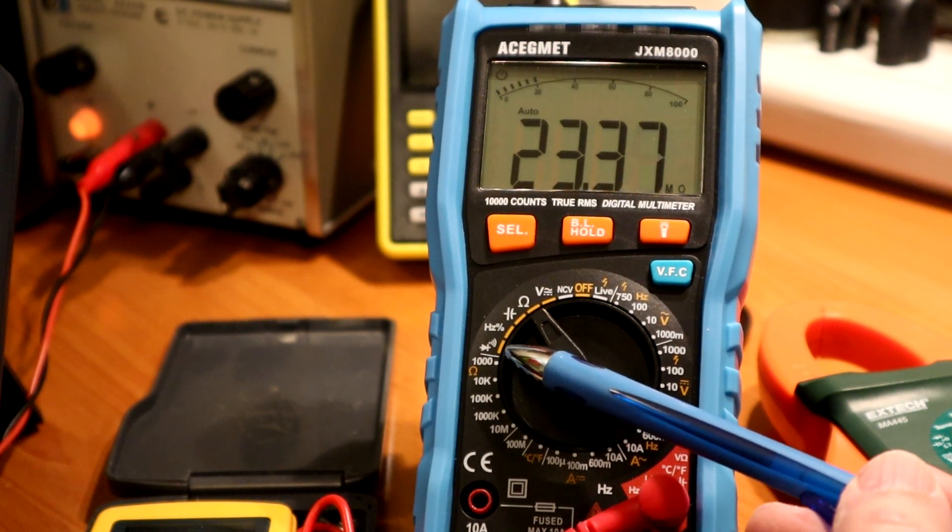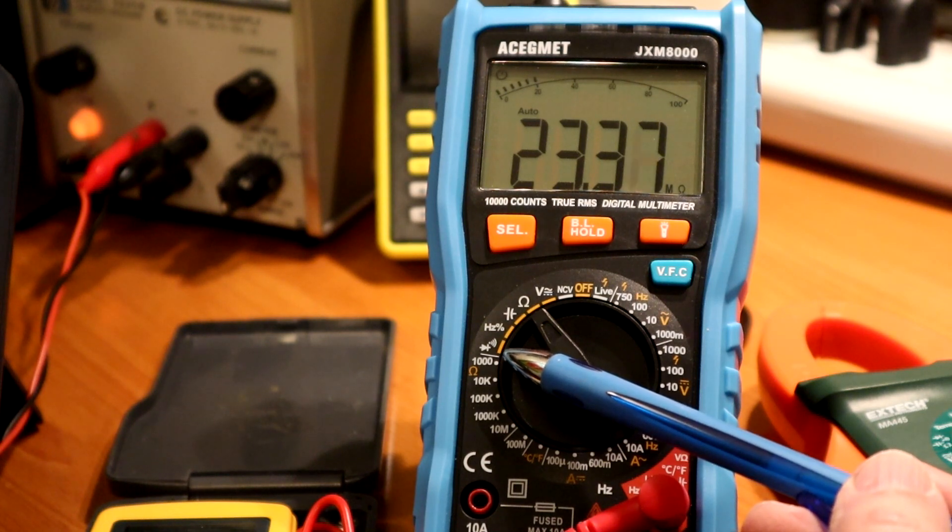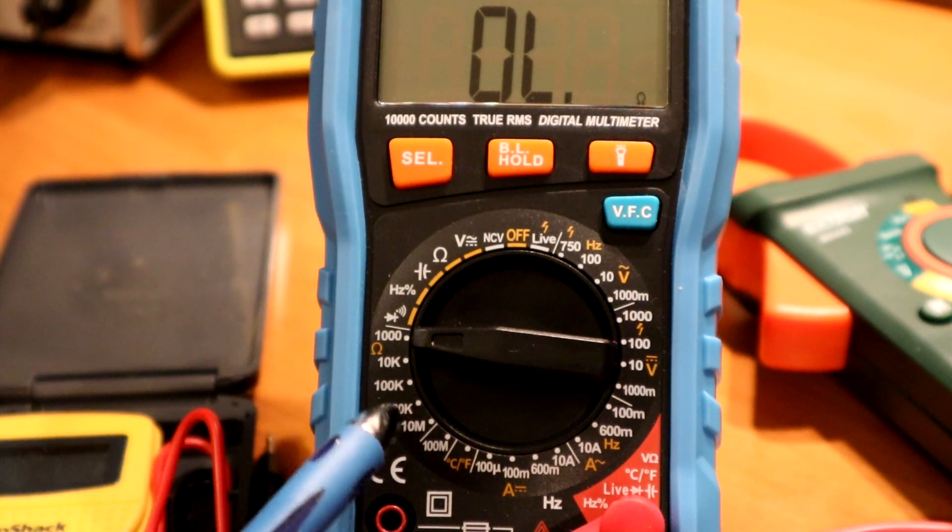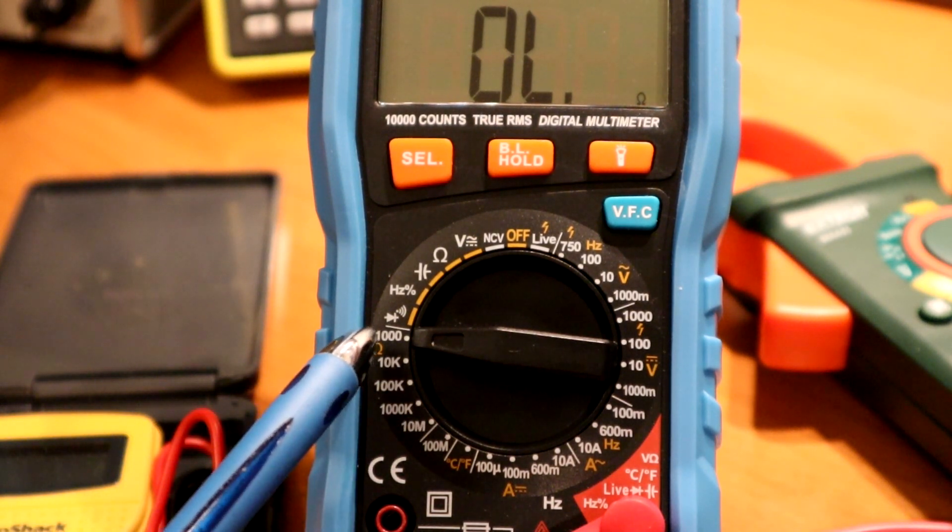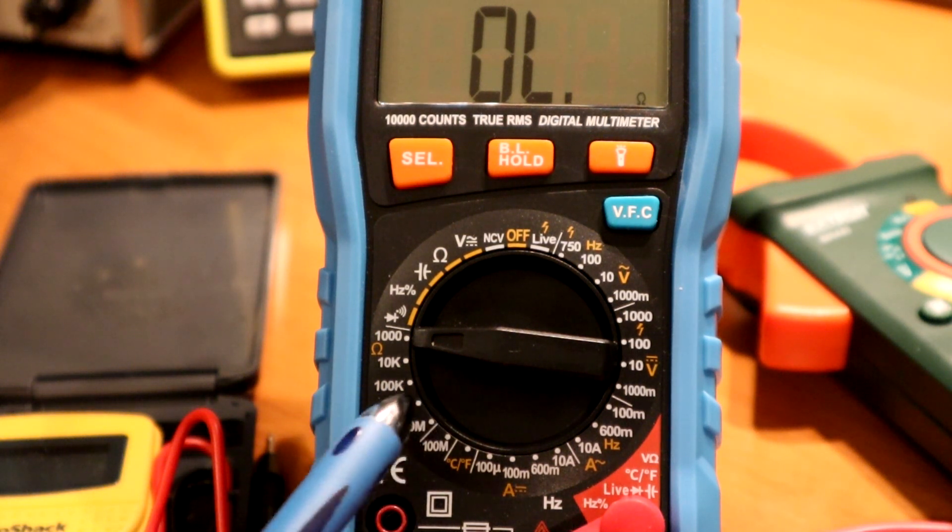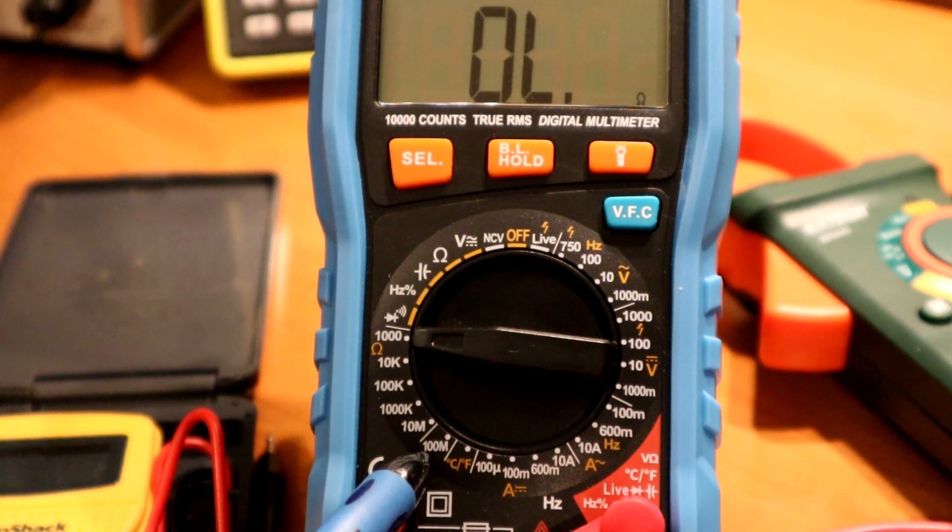There's also the obligatory diode slash continuity setting. And then we have our manual ranges. This is the setting for the ohms ranges. 1000 ohms, 10k, 100k, 1000k, don't know why they didn't label it 1 meg, 10 meg, and a 100 meg scale, which seems to work based on my resistor test there.